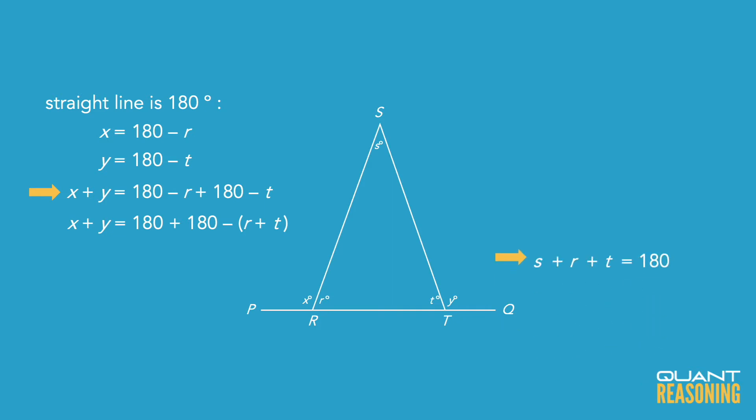But we also know that the sum of the angles in a triangle is 180. So S plus R plus T is 180, which means that if we can find the value of S, we can infer the sum of R and T and that would answer the question.